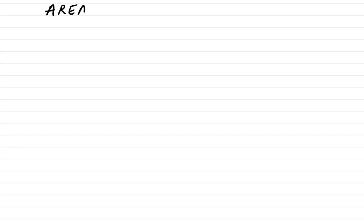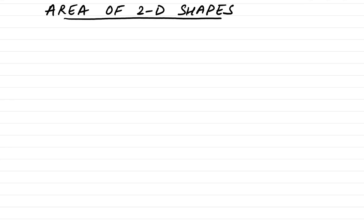Let's learn how we can find the area of 2D, means two-dimensional shapes. The two-dimensional shapes are like those we can easily draw on a piece of paper. Let's start with the first shape: area of rectangle.